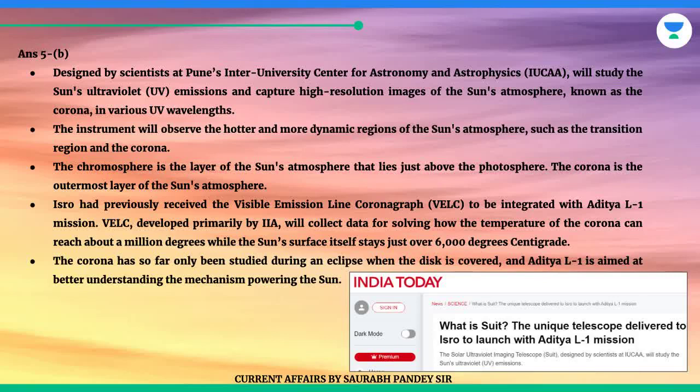Designed by scientists at Pune's Inter-University Center for Astronomy and Astrophysics, IUCAA, it will study the sun's ultraviolet UV emissions and capture high-resolution images of the sun's atmosphere, known as the corona, in various UV wavelengths. The instrument will observe the hotter and more dynamic regions of the sun's atmosphere, such as the transition region and the corona. The chromosphere is the layer just above the photosphere; the corona is the outermost layer of the sun's atmosphere.